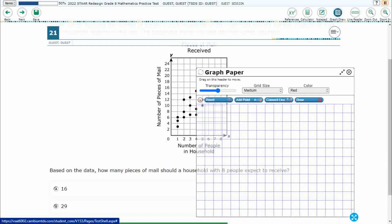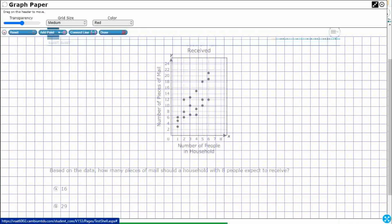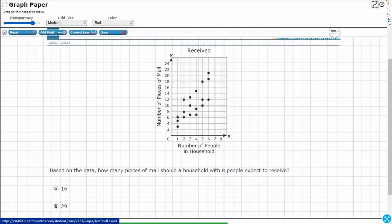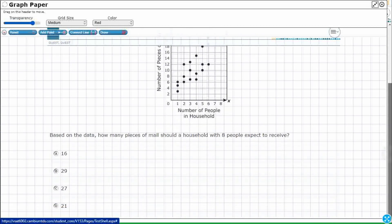Let's open up our graph draw feature here. Since we do have to scroll to see the answers, what I'm going to do is take these answers and bring them up here. Let me write these in: A is 16, B is 29, C is 27, D is 21.